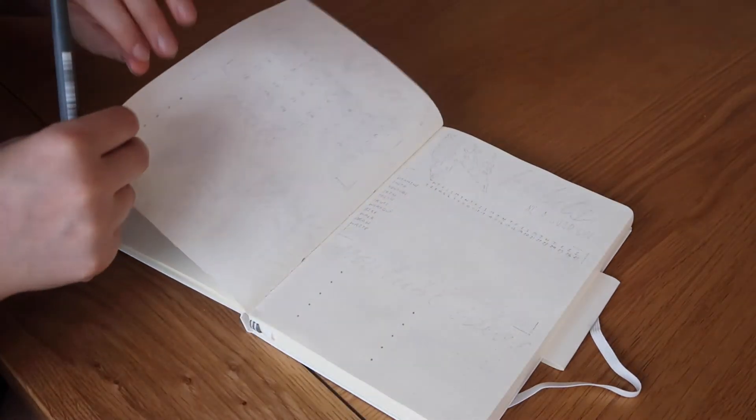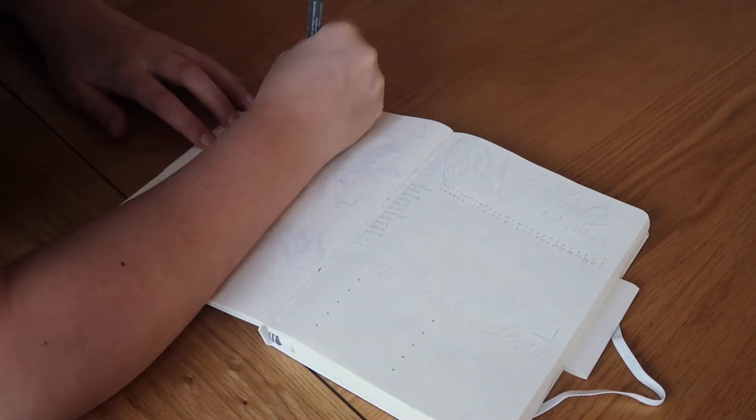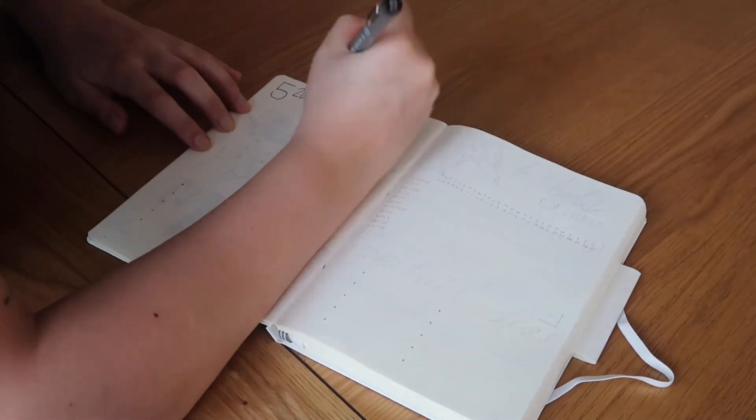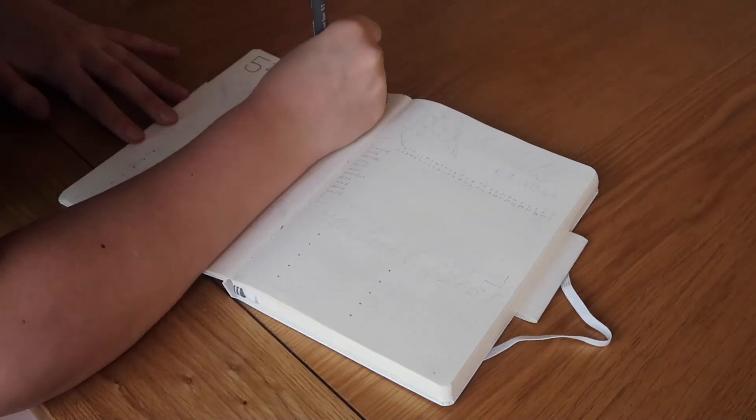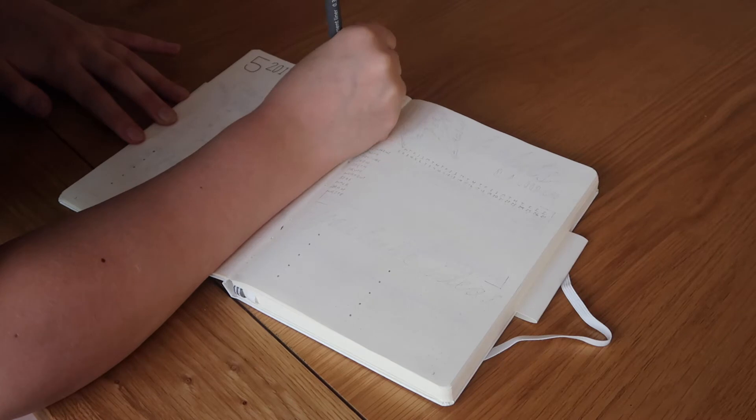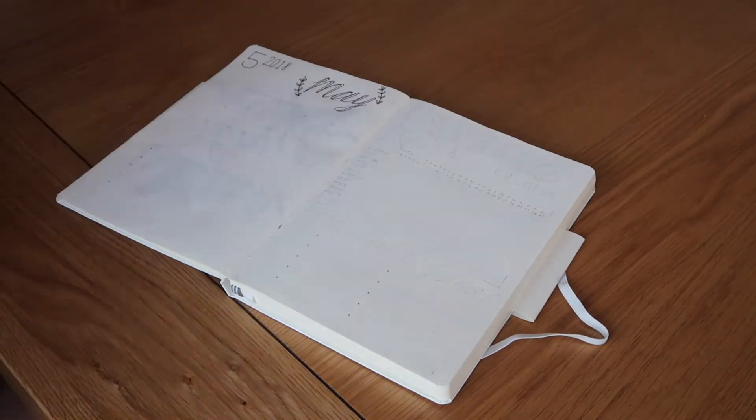I think it looks really pretty, but I'm using the Leuchtturm journal by the way. I've obviously seen these in bullet journal videos and this is the one I decided to get. I got it from Ryman's for anyone that's in the UK. I sort of struggled to find one. That's the only place that I found one.